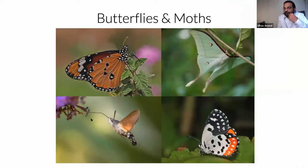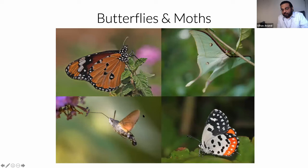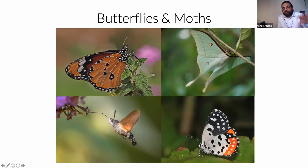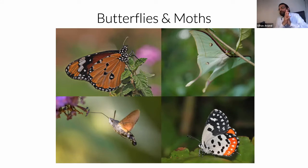Some butterflies feed on milkweed and store toxins in their body. The red pierrot butterfly feeds on bryophyllum - if you have a bryophyllum plant in your garden you'd see this butterfly around, though the larva burrows between the two leaf layers and is hard to spot. Bangalore has a great variety of beautiful butterflies and moths. For spiders, the common two-tailed spider can be found on virtually any tree trunk in Bangalore - tap a tree and it will scurry up; it has two small tails coming from its abdomen.